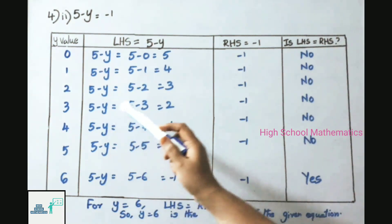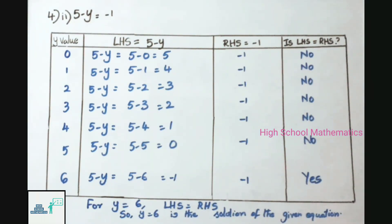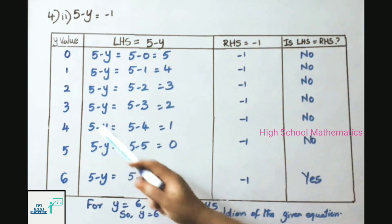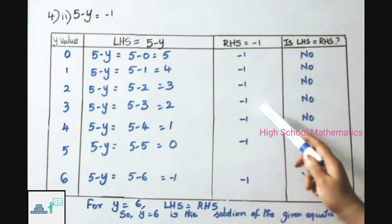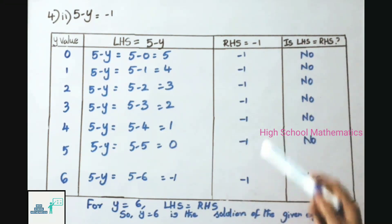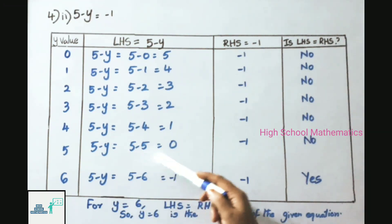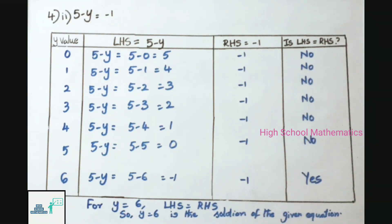For y = 2: LHS = 5 − 2 = 3; RHS = −1; not equal. For y = 3: LHS = 5 − 3 = 2; RHS = −1; not equal. For y = 4: LHS = 5 − 4 = 1; RHS = −1; not equal.